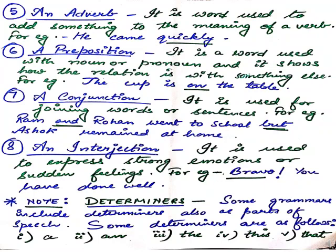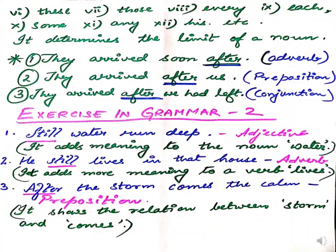Now note one thing — determiners. What are determiners? Some grammars include determiners as parts of speech and some do not. Some determiners are: a, the, this, that, these, those, every, each, some, any, his, many, etc. These determine the limit of a noun — so these are known as determiners.